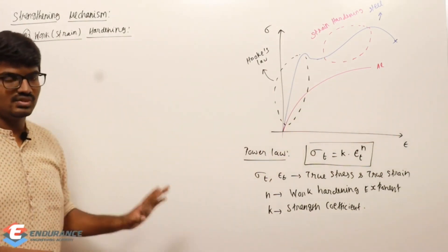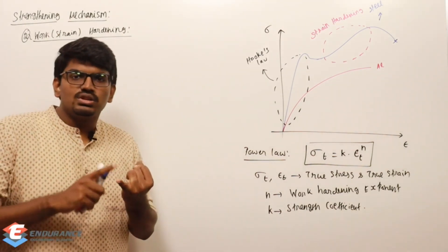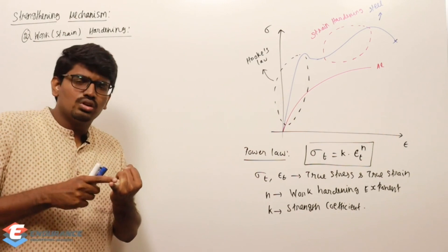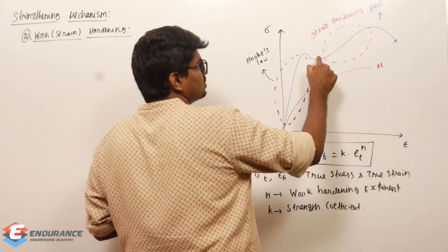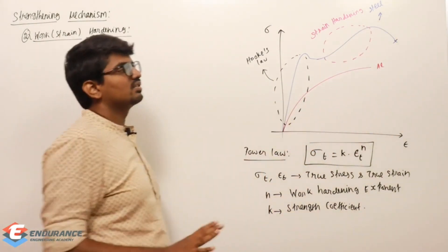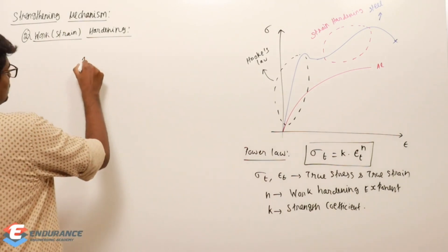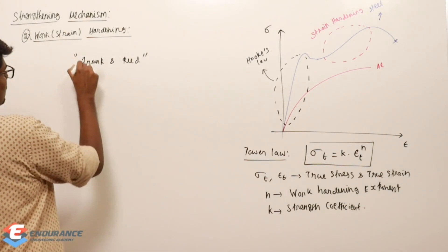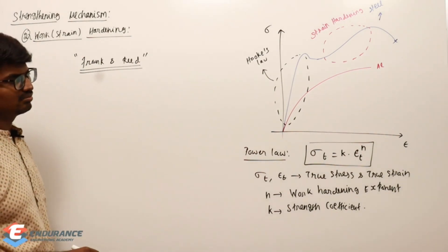To summarize: strain hardening means there is a sudden increase in strength such that I need to apply more load to cause further deformation, whereas until that point the load was almost constant. The reason this happens is explained by two scientists called Frank and Read.